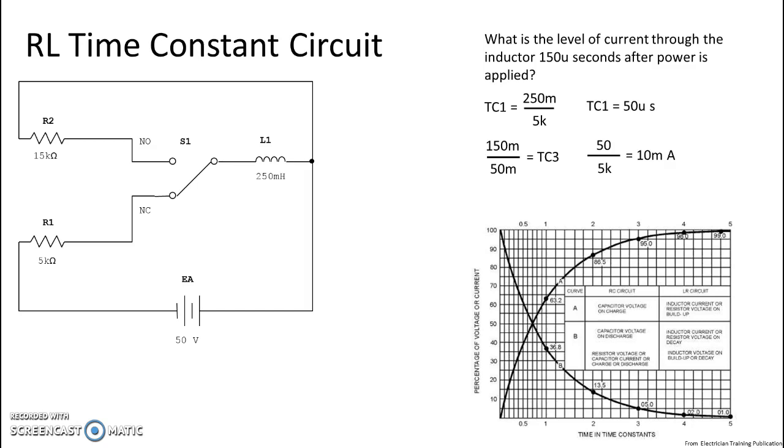All right, so we are at 10 milliamps for total current. So if we are at 10 milliamps for total current and we are at time constant three, then we know that the current through our inductor at 150 microseconds is 10 milli multiplied by 95%, or if you're putting it into your calculator, 10 milli times 0.95, and that gives us 9.5 milliamps is the level of current through the inductor 150 microseconds after power is applied.